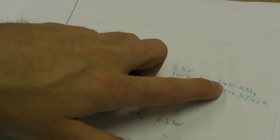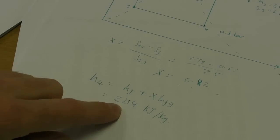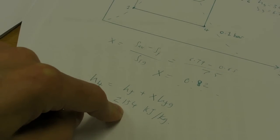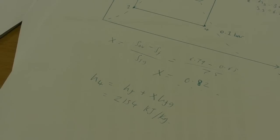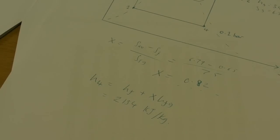So we've got our enthalpy at state 3 of 3,410 and our enthalpy at state 4 of 2,154 kilojoules per kilogram, and that's what we need to calculate. That's how we did it using the tables — it took a little bit of time and we had to go through a few equations to deal with the dryness fraction, the fact that we were in the saturated region as a mixture of liquid and vapour.